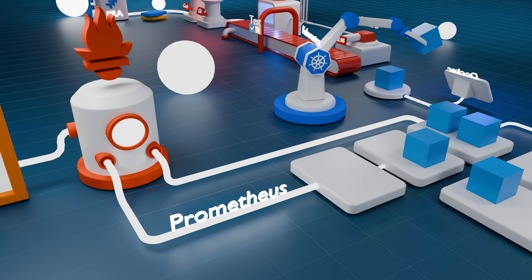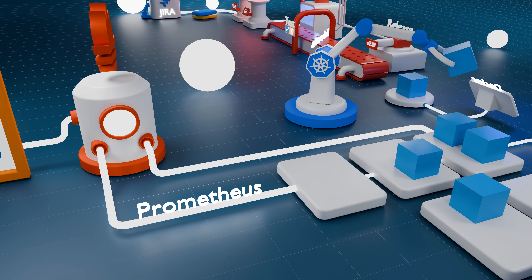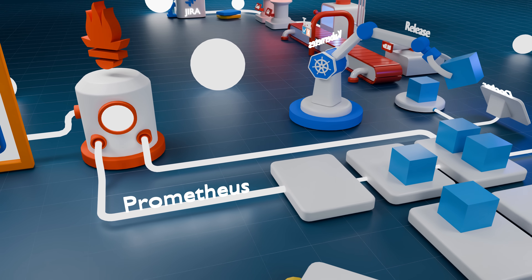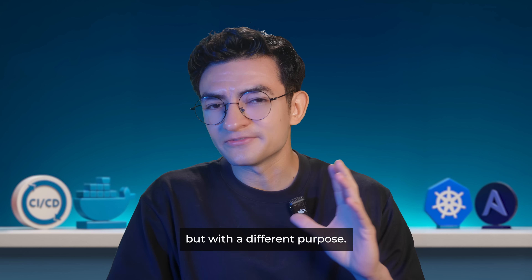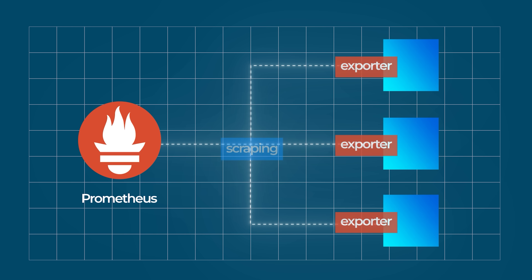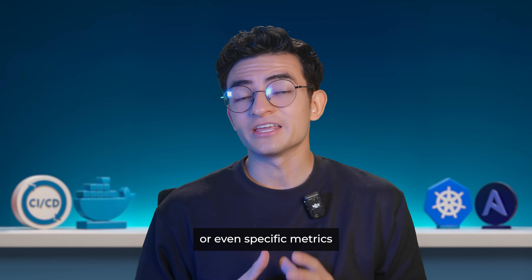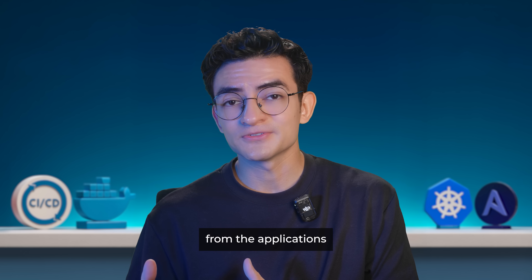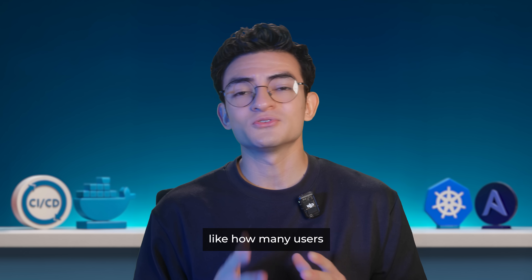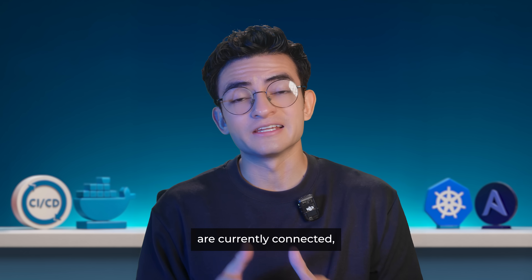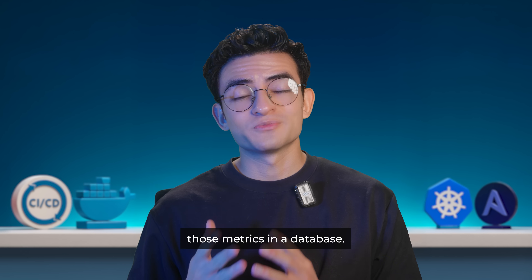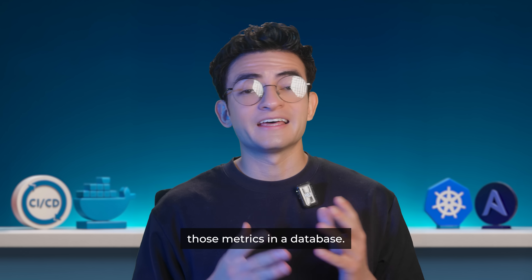Next tool: Prometheus. Prometheus is also a tool that is connected to all our existing servers, but with a different purpose. Prometheus is collecting all their status metrics — metrics like CPU usage, RAM, network traffic, or even specific metrics from the applications, like how many users are currently connected. Then it stores those metrics in a database.